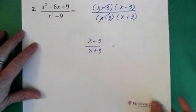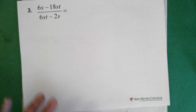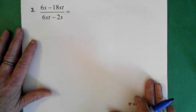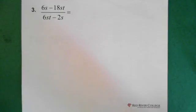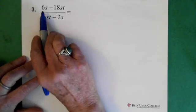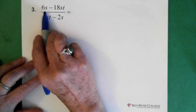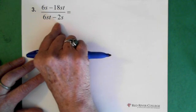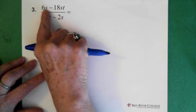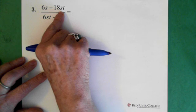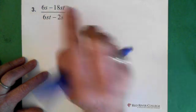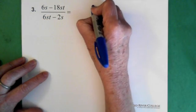Last question. Now for this one, what we do is we factor out the common terms for the top and the bottom. So on the top, we can see that there's a 6s in both terms. So we take the 6s, or pull the 6s out of here.